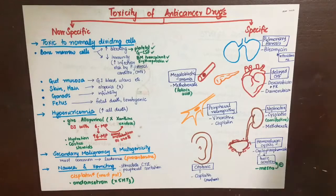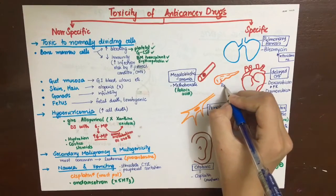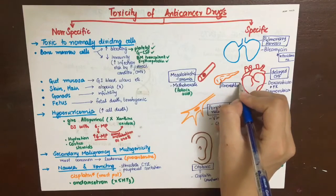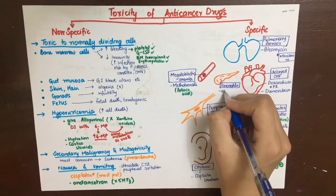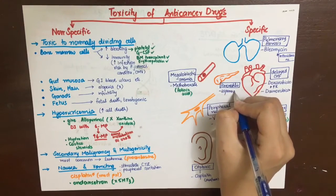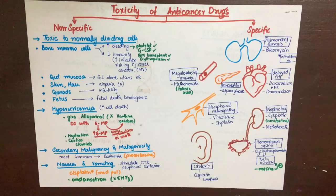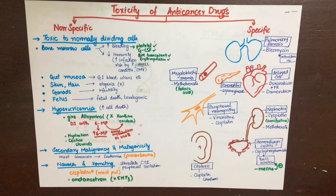Lastly, pancreatitis is associated with asparaginase, an enzyme drug used in cancer therapy that converts asparagine into aspartic acid. Normal cells can synthesize asparagine themselves, but cancer cells depend on exogenous asparagine, so when asparaginase is administered it can cause pancreatitis. That concludes the discussion of anti-cancer drugs.